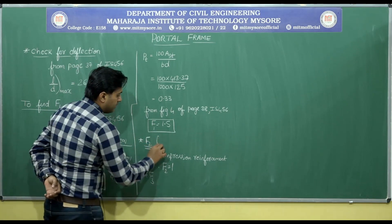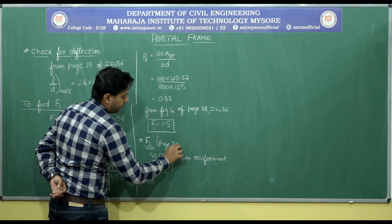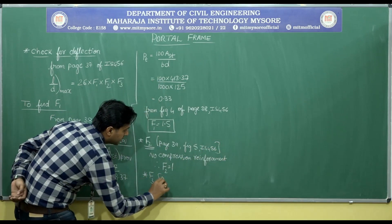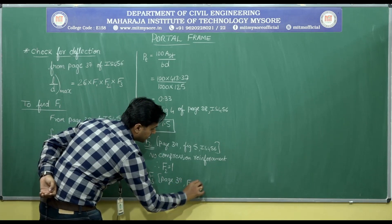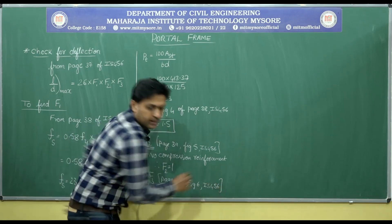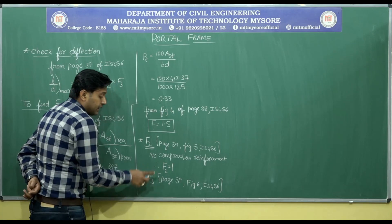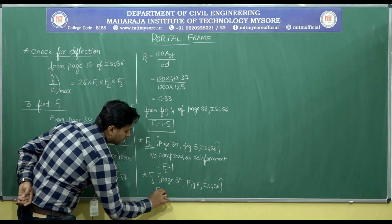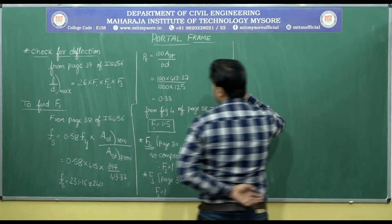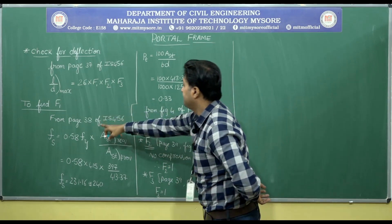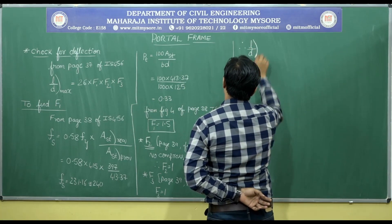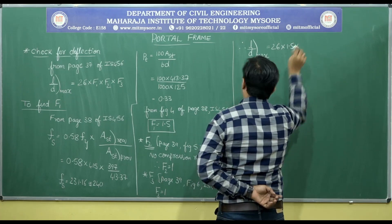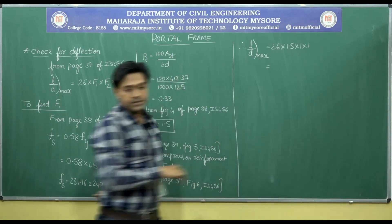What about F3? From page 39, figure 6 of IS456, this figure says that if it is a flanged section, a different factor applies. But since the slab is not a flanged section, F3 is also equal to 1. Substituting all these: L/D max = 26 × F1 × F2 × F3 = 26 × 1.5 × 1 × 1 = 39.